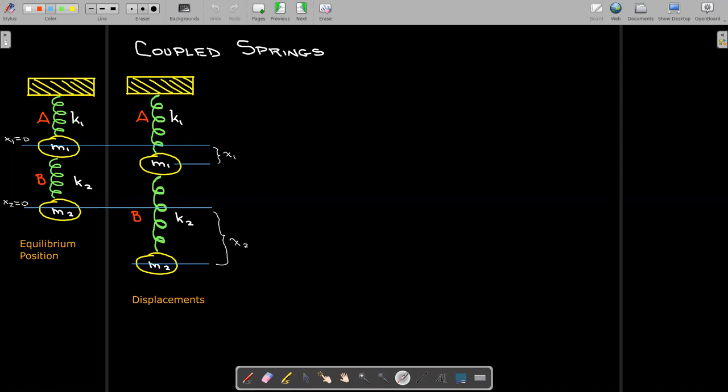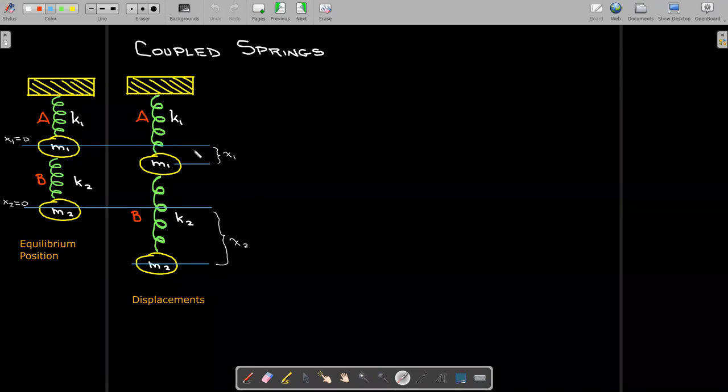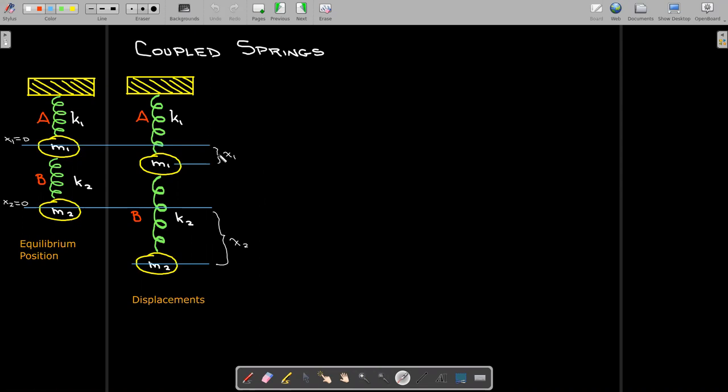So then if I displace or pull down the bottom spring, I'm going to get a displacement from the equilibrium position for each of the springs. That's going to depend on their stiffness or spring constants. And so now we've got a system. We're going to have each one of these variables, x1 and x2, changing over time. And so we can find equations of motion.